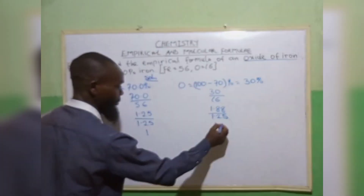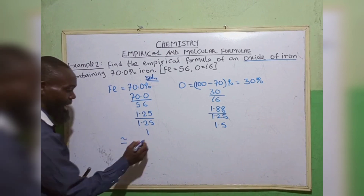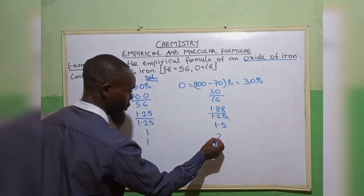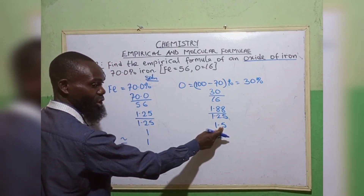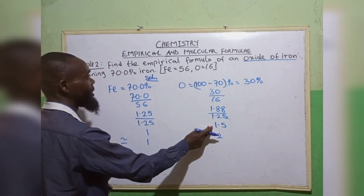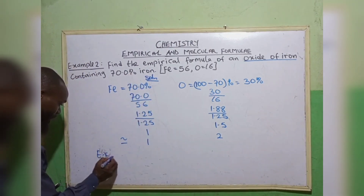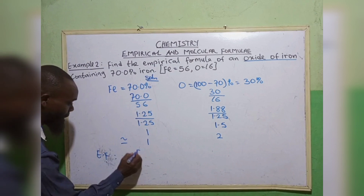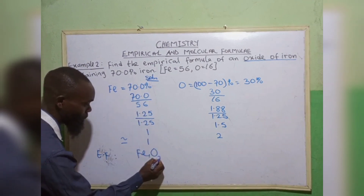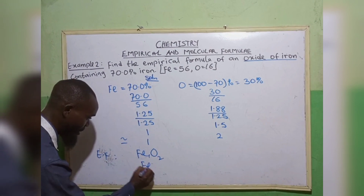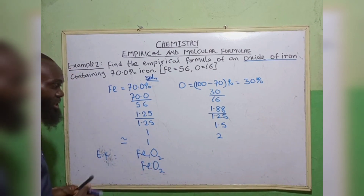So here we have 1 and 1.5. Then we now change to whole numbers. Because this 0.5 is a number between 5 to 9, you round up by 1, making 2. So the empirical formula becomes iron Fe₁, then oxygen O₂. That is FeO₂. So this is the empirical formula.